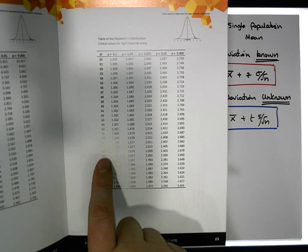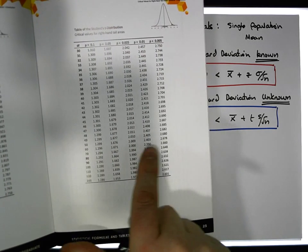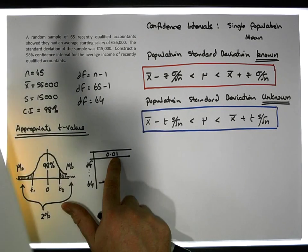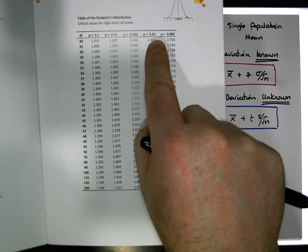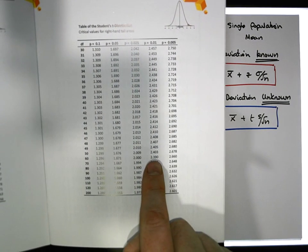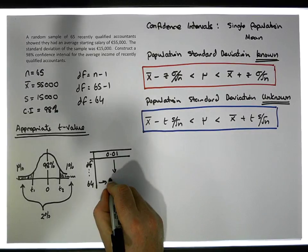Our appropriate t-value is somewhere on this row. We've got one percent or 0.01 in the right-hand tail. We're going to go to the 0.01 column, come down to the row at 60, and that gives us a t-value of 2.390.